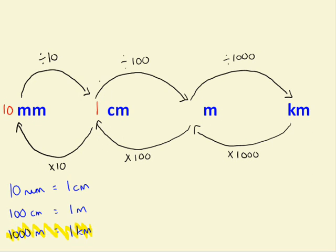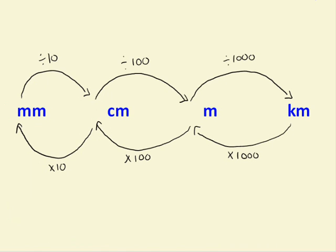What we have here is a nice little table — a chart — which allows us to convert between all the units used in measuring distance. Now, in order to convert between these units, the easiest way I find is that because these numbers are 10, 100, and 1000, basically all it involves is moving a decimal place. And I'll show you what I mean by this.